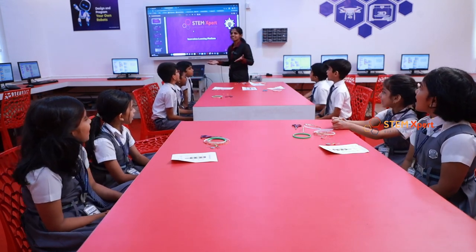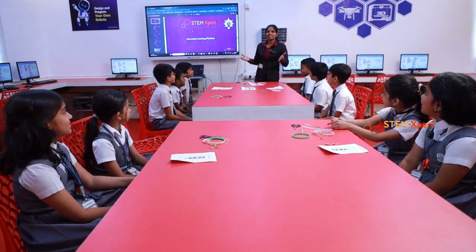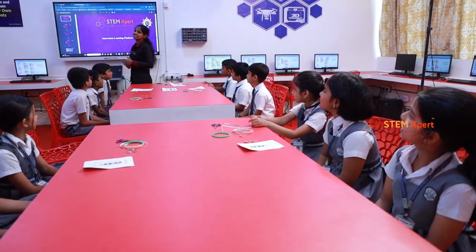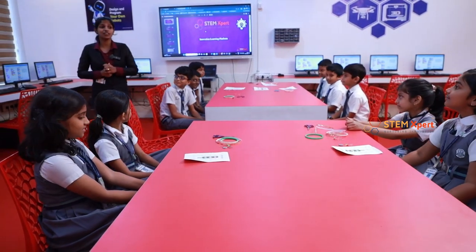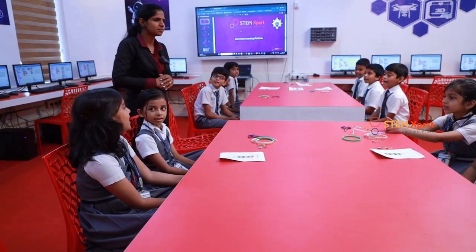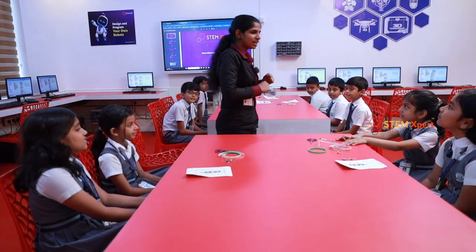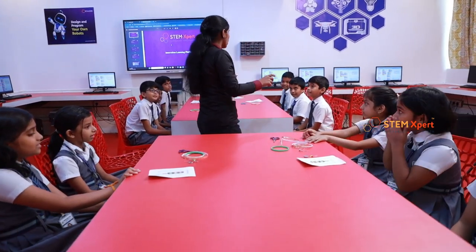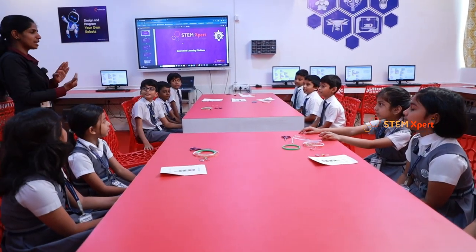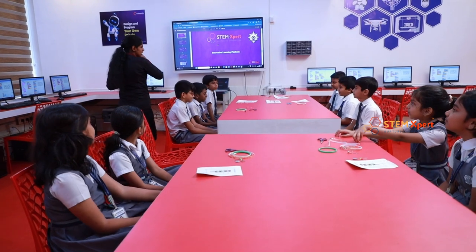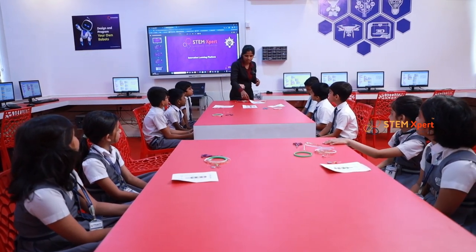Good afternoon, children! How are you today? Before moving on to today's classes, let me first recall what we learned in our previous class. We learned an LED lighting circuit — what is an LED, the full form LED stands for Light Emitting Diode. An LED has two legs: the positive longer leg and the negative shorter one. We also learned how to light an LED using copper tape.